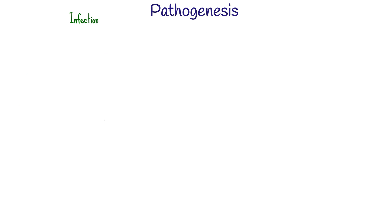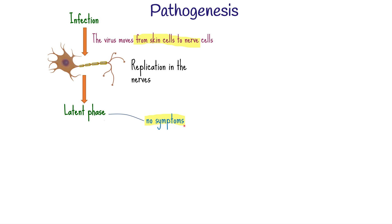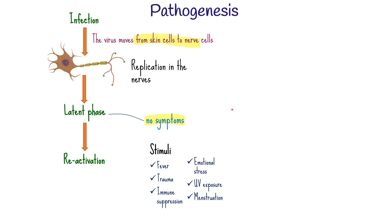After a person acquires the infection, the virus moves from skin cells to nerve cells. In the nerve cells, it enters an initial period of replication, after which it becomes inactive — what is also known as the latent phase or latency. This inactive phase is characterized by a period where the patient does not show any symptoms of the disease. Reactivation of the infection can be induced by various stimuli like fever, trauma, immune suppression, emotional stress, UV exposure, and hormonal changes like in menstruation. The reactivated virus spreads distally from the ganglion to initiate new cutaneous and mucosal lesions.